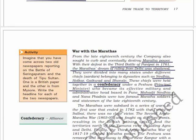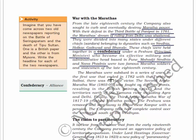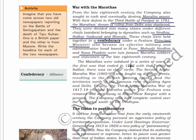Mahadji Sindhia and Nana Phadnavis were the two most famous Maratha soldiers and statesmen of the late 18th century. The Marathas were subdued in a series of wars. In the first war that ended in 1782 with the Treaty of Salbai, there was no clear victory. The second Anglo-Maratha war started in 1803 and lasted till 1805, fought on different fronts resulting in the British gaining Orissa and the territories north of the Yamuna river including Agra and Delhi.